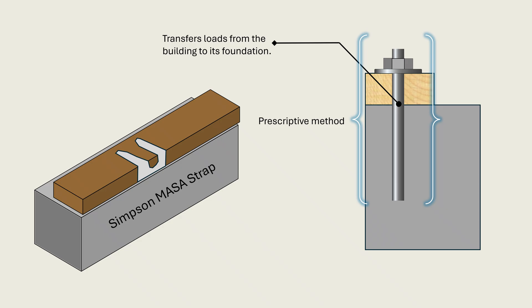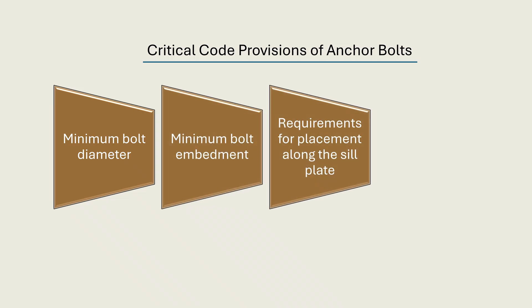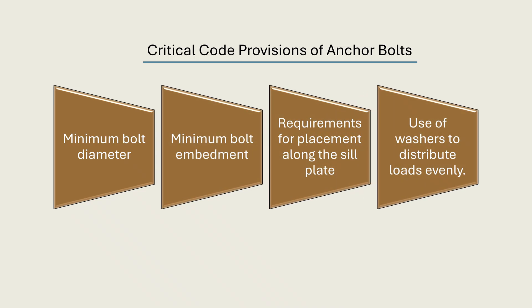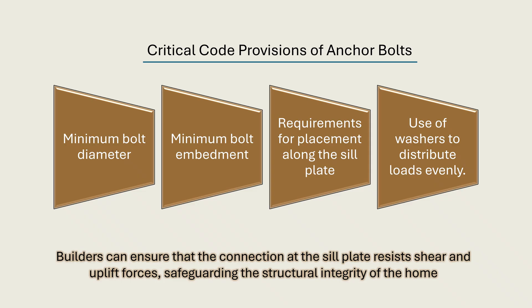In this video, we will explore the critical code provisions on anchor bolts including factors such as minimum bolt diameter, minimum bolt embedment, requirements for placement along the sill plate, and the use of washers to distribute loads evenly. By adhering to these standards, builders can ensure that the connection at the sill plate resists shear and uplift forces, safeguarding the structural integrity of the home.